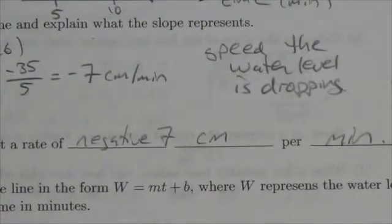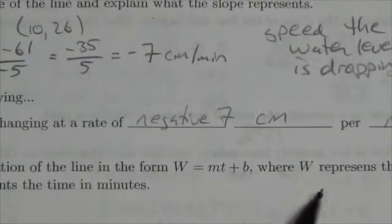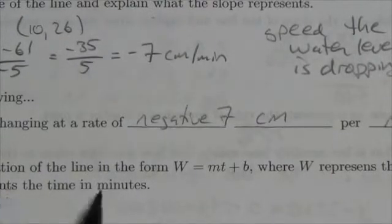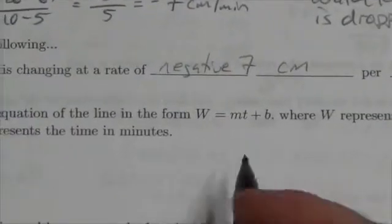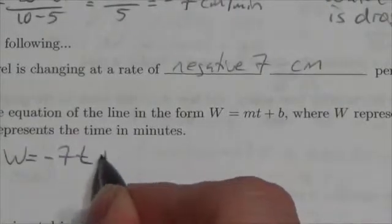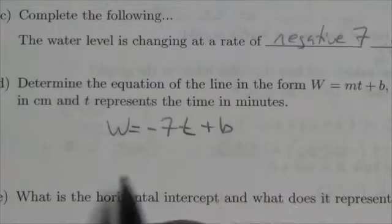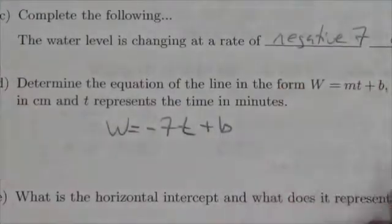Okay, now determine the equation of the line in the form W equals mt plus b, where W represents the water level in centimeters and t represents the time in minutes. So right now what we've got is water level is equal to, well we already know the slope is negative 7t. What we don't know is the plus b. So I'm going to plug in one of the points that we've got, and one of the points was the point 5, 61.